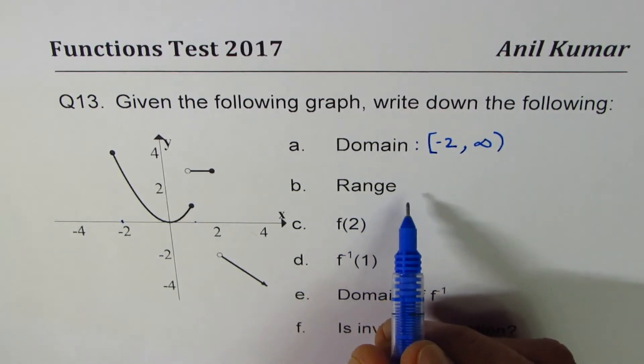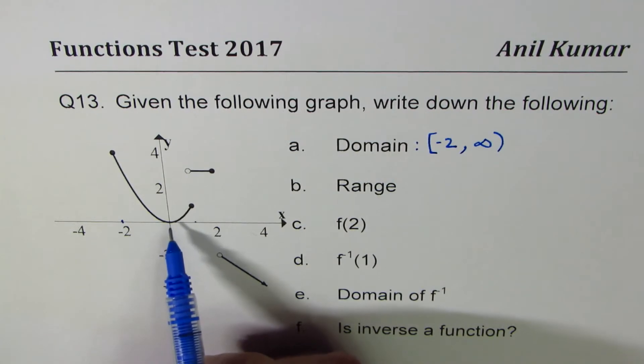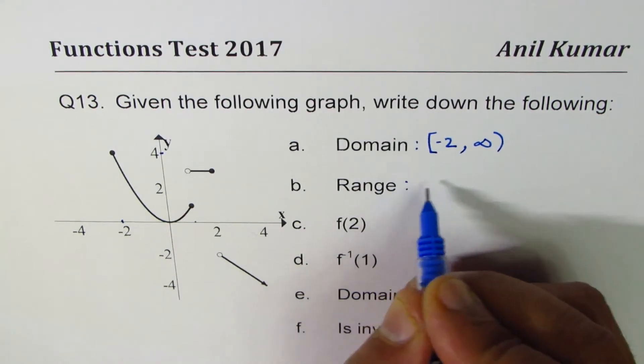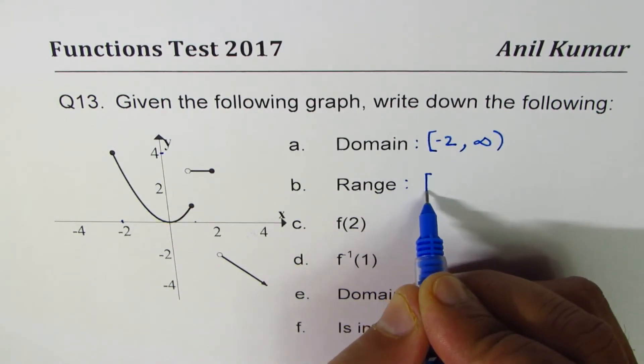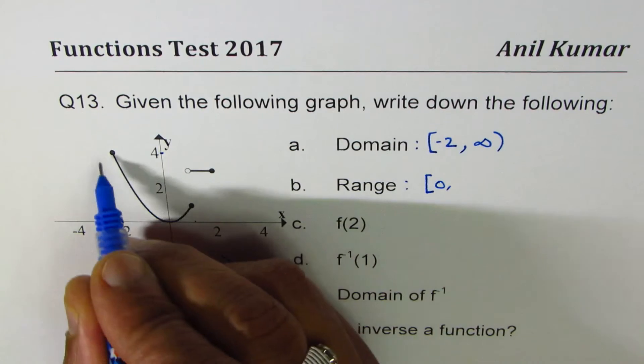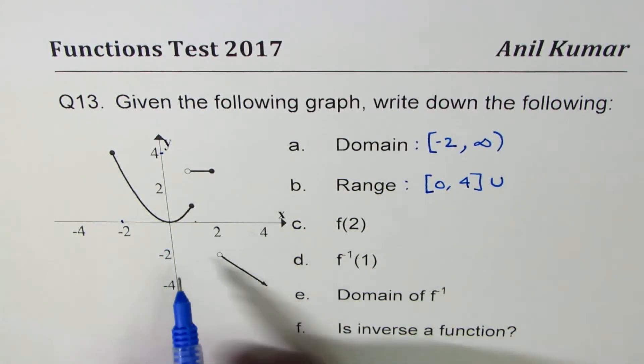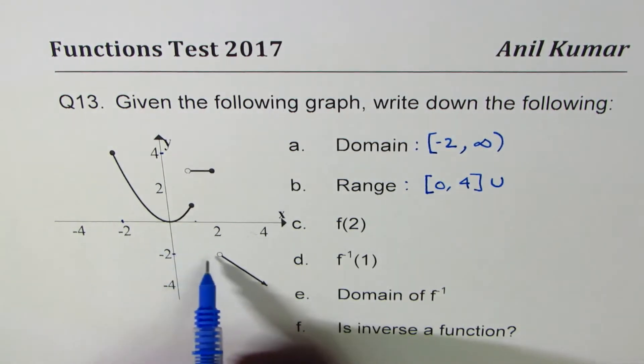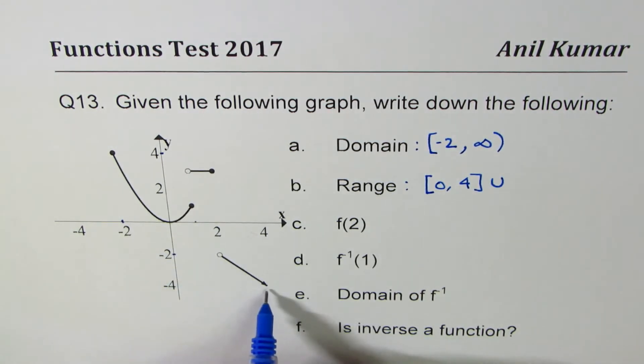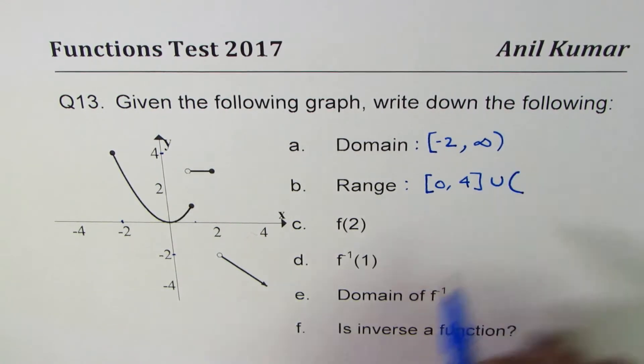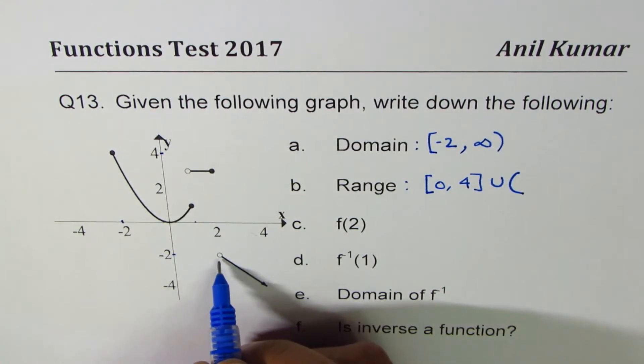Now let's look into the range. We see that the range is from 0 to, let's say this value is 4, so the range is from including 0 to including 4, union there's a break in between, and then from minus 2 to minus infinity. Minus 2 is not included since we have an open circle here, so it is from minus 2 to minus infinity.